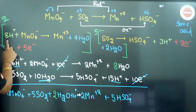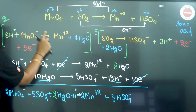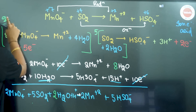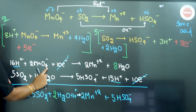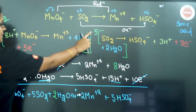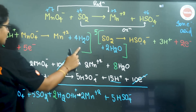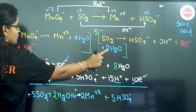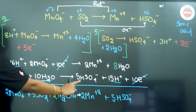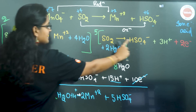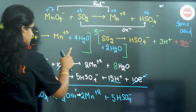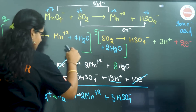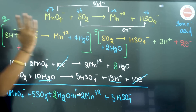Now let's add the equations. 16 H+ plus 2 MnO4− gives 2 Mn2+ plus 8 H2O with 10 electrons. Plus 5 SO2 gives 10 H2O plus 5 HSO4− plus 15 H+ plus 10 electrons. Electrons are balanced and cancel.